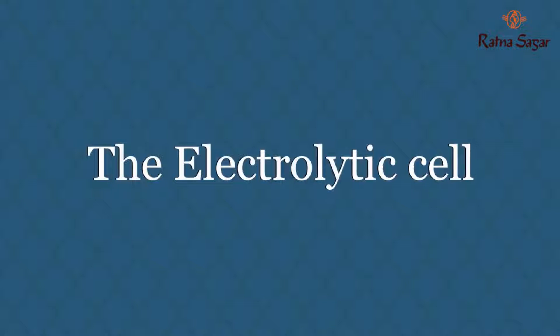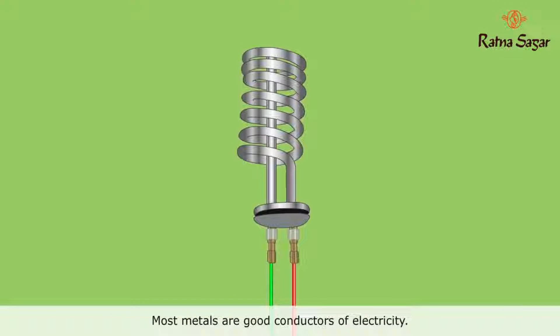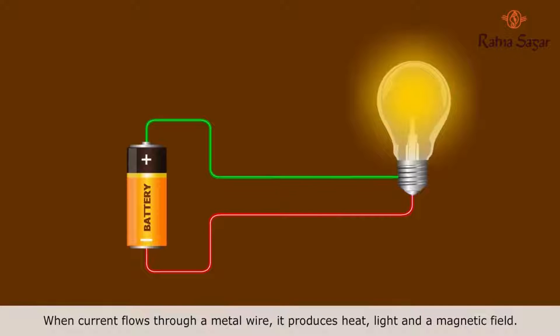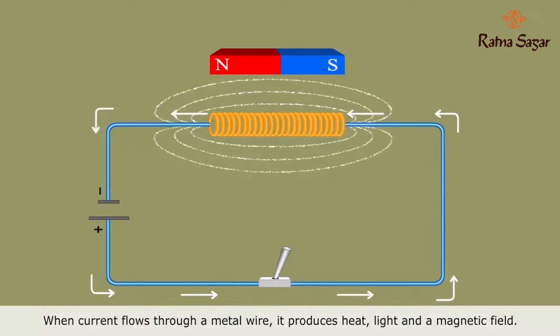The electrolytic cell. Most metals are good conductors of electricity. When current flows through a metal wire, it produces heat, light, and a magnetic field.